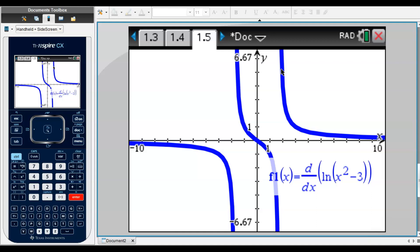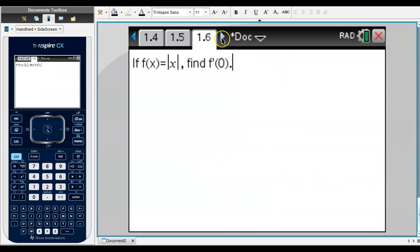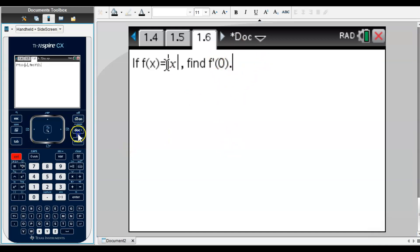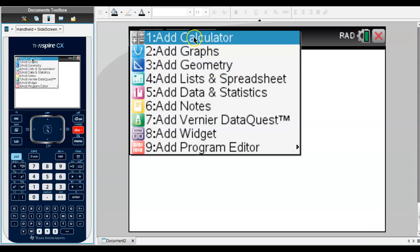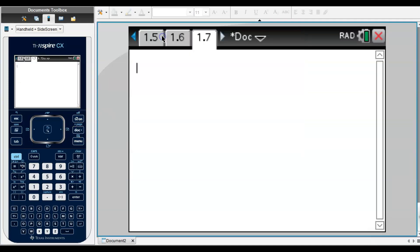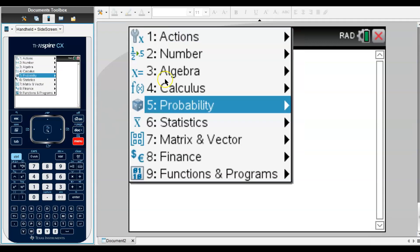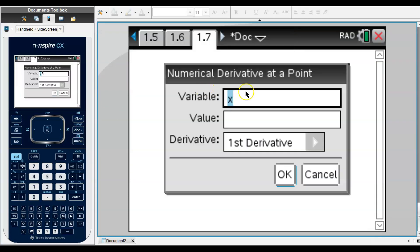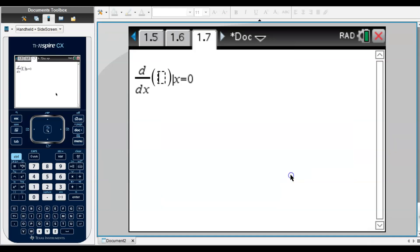The last example we have: if f(x) = |x|, find f'(0). This is just as simple. I go Control, Calculator, and then I'm going to take the derivative. So Calculus, Numerical Derivative, I want the value at zero, and I'm going to enter my function: absolute value of x.